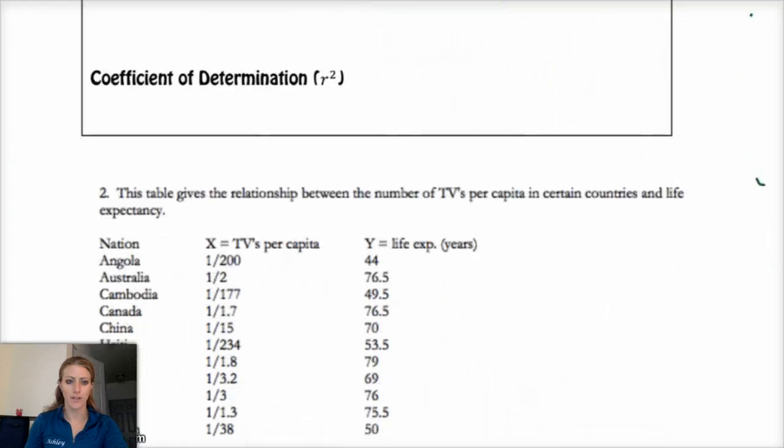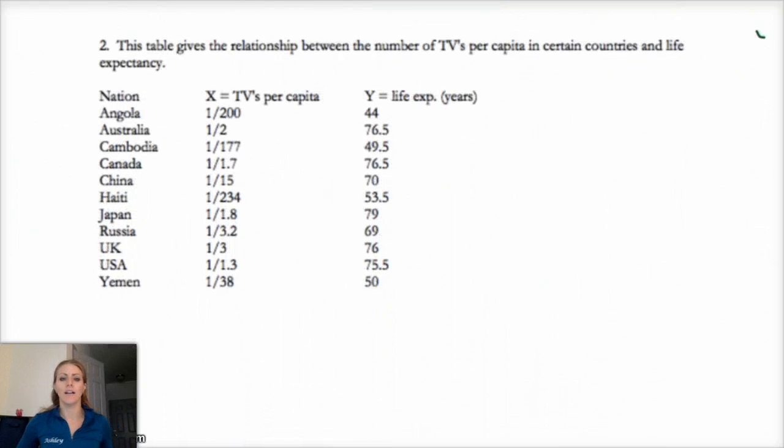So I have given you a set of data. This is a relationship between the number of TVs per capita in certain countries and life expectancy. So we're just going to kind of take a look at how these two variables are related. TVs and life expectancy, would you think that they're related?